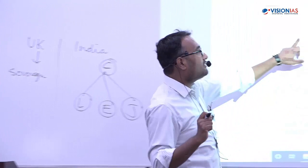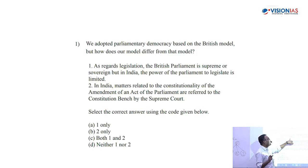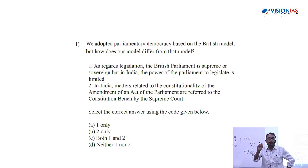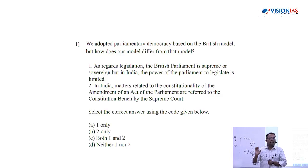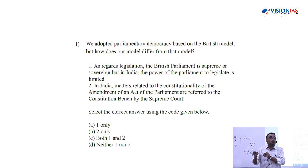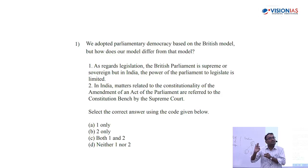As regards legislation, the British Parliament is supreme or sovereign, but in India the power of Parliament to legislate is limited. This whole debate started back in the 1950s when Parliament was making certain laws related to land acquisition and zamindari abolition acts. On 24th April 1973, in Keshvananda Bharati versus State of Kerala, the Supreme Court exhaustively deliberated upon the powers of Parliament to amend the Constitution, ruling that Parliament's powers are not unlimited.